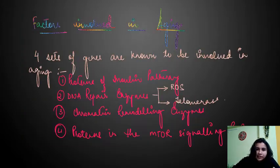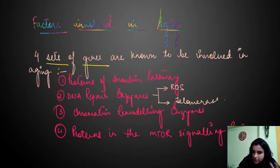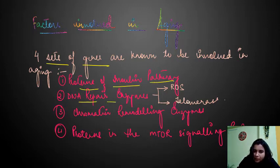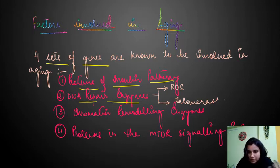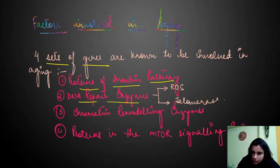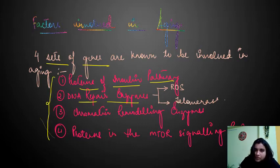There are basically four sets of factors involved in the aging process. These are: proteins of the insulin pathway, DNA repair enzymes, reactive oxygen species (ROS) and telomerase, and chromatin remodeling enzymes. If there are changes in these four factors, it leads to aging.